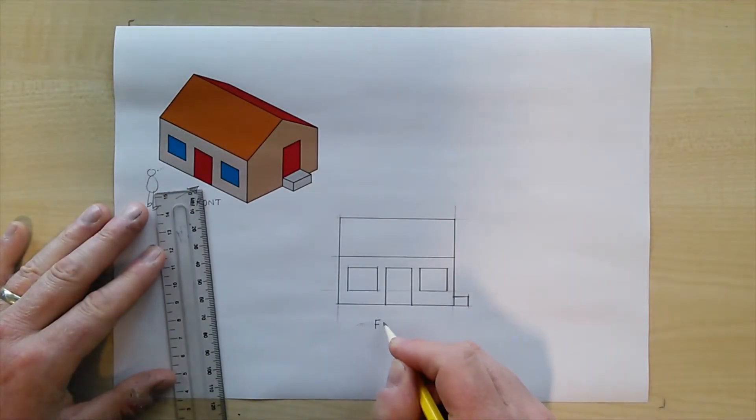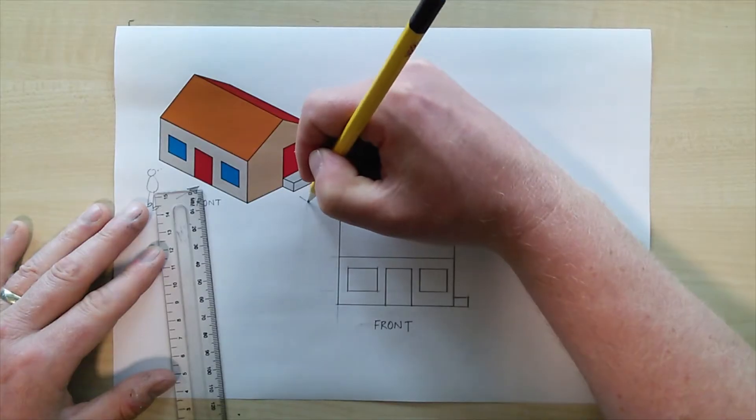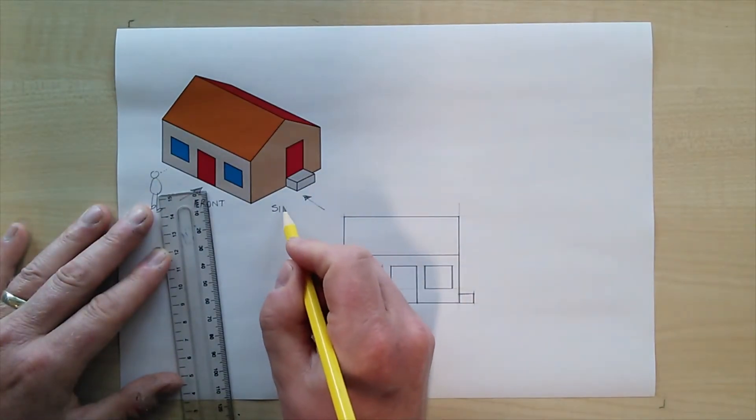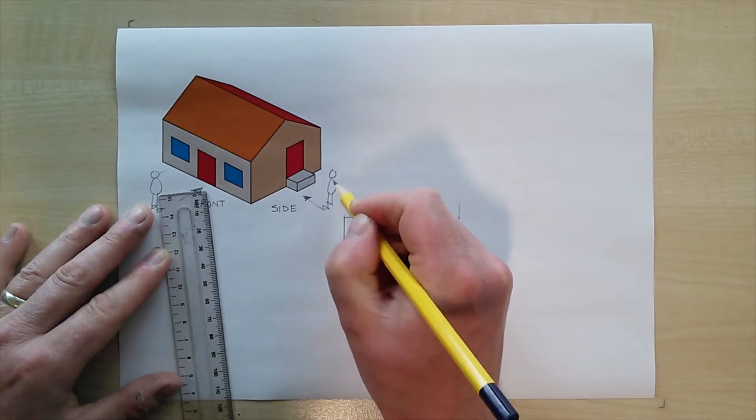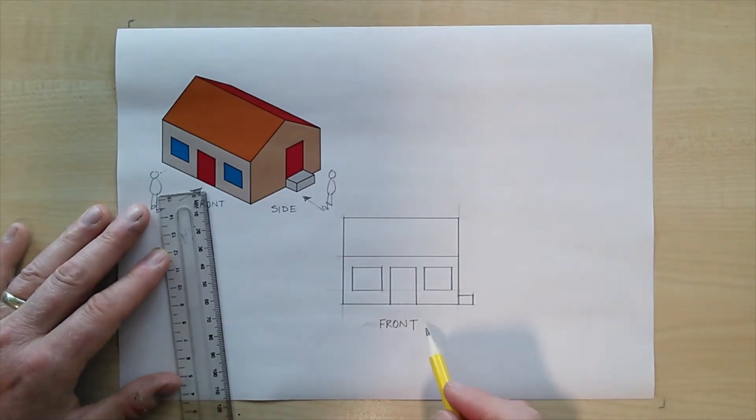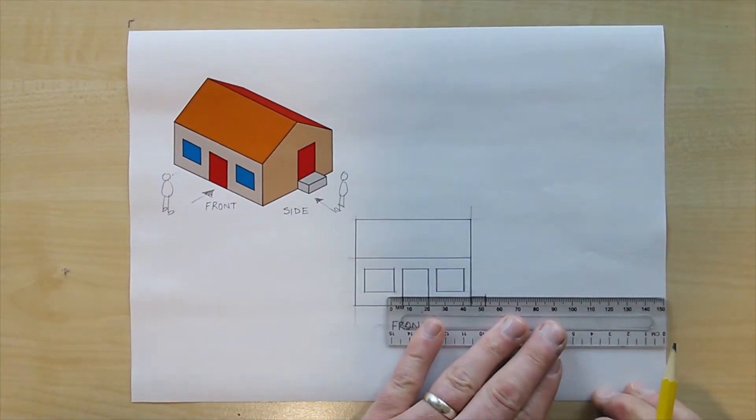Very important that you label your orthographic views as well. Next up is the side view and again I'm going to label that side view and I'm going to imagine a little person standing at the side of the house and ask myself what would that person be able to see.